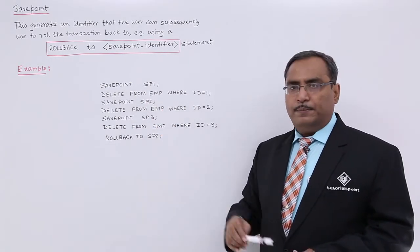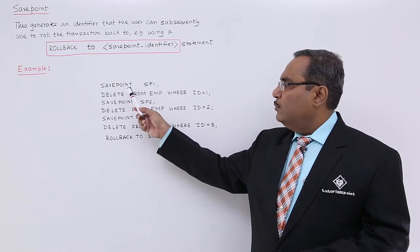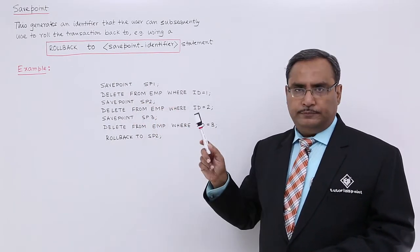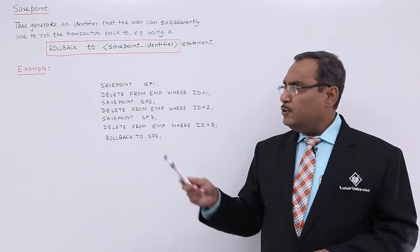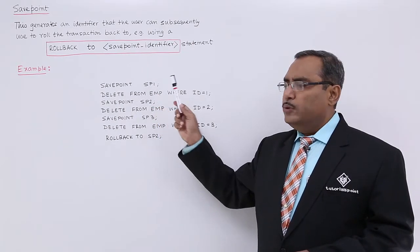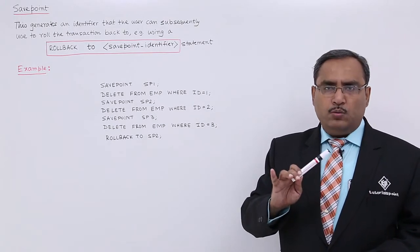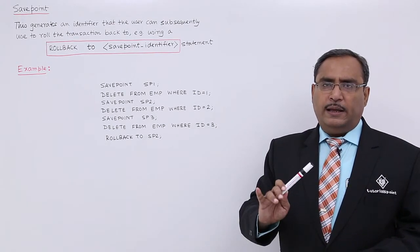let us go for this example. So, here we are defining one SavePoint at this particular line. SavePoint SP1, you can give other names also. For SavePoint, so we have written SP. You can give, say, Marker1 or say, Line1, whatever the identifier name, you can give there.